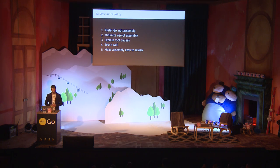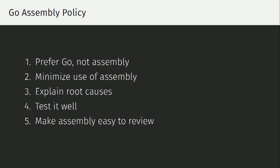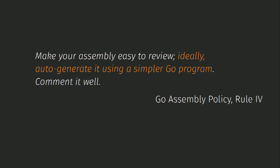The Go community has since recognized this is a problem and instituted an assembly policy governing what assembly will be allowed into the standard library. We should always prefer Go over assembly and minimize its use. If we're going to use it, it must bring massive performance benefits. We should explain the root causes, why we need this. The testing requirements should be that much higher. And what I want to focus on is that this assembly should be easy to review — ideally auto-generated with a simpler Go program.